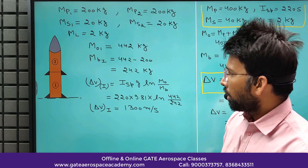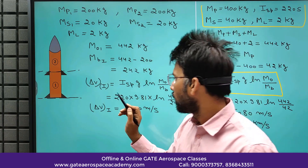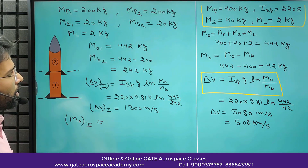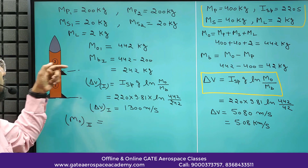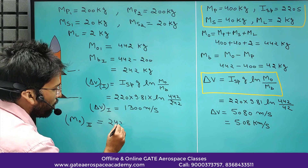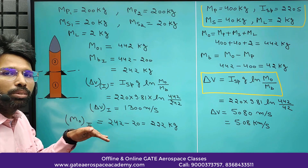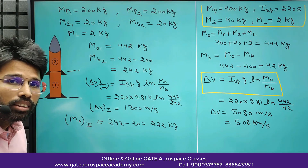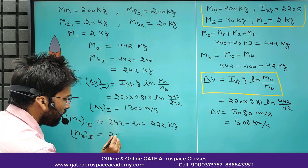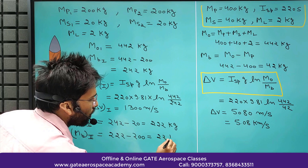After burning of the first stage, we throw the first stage structure out. The initial mass of the second stage: after burning the first stage propellant, mass was 242 kg, then we throw the structure of 20 kg, so 242 minus 20 equals 222 kg — that will be the initial mass of the second stage. The burnout mass of the second stage is initial mass minus propellant mass of 200 kg: 222 minus 200 equals 22 kg.